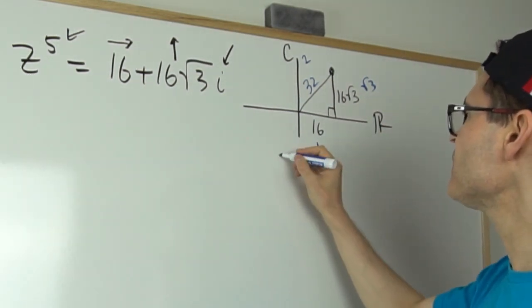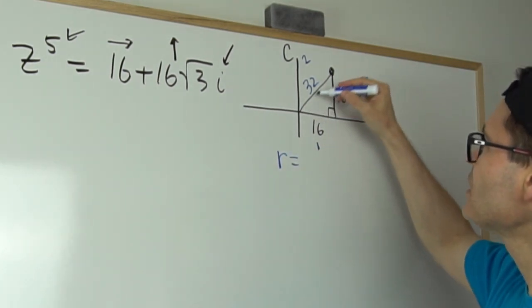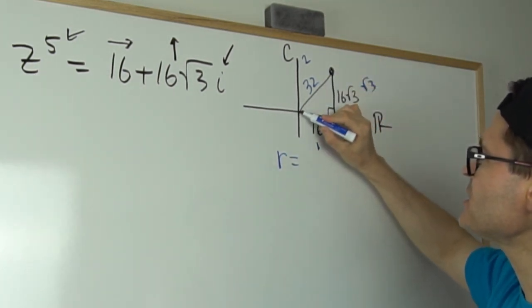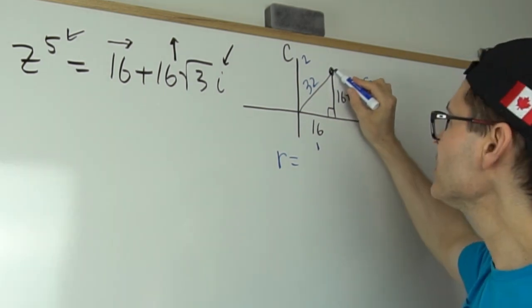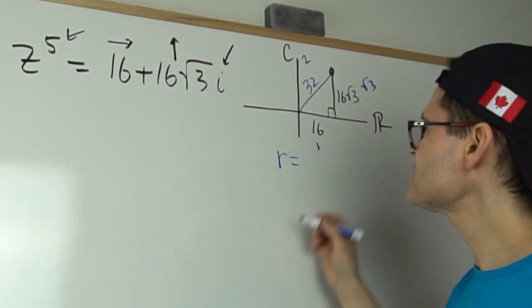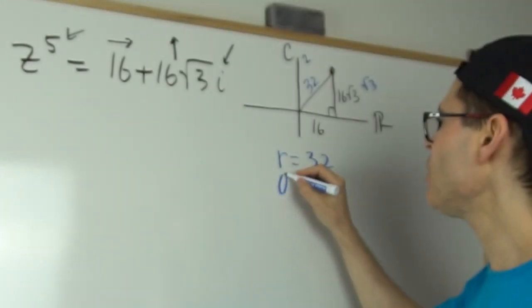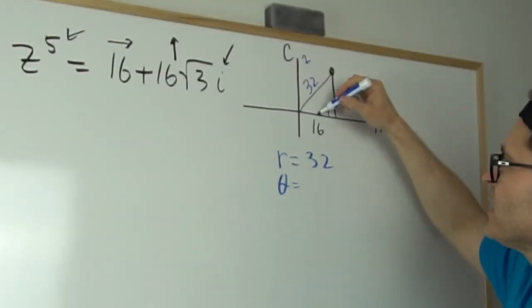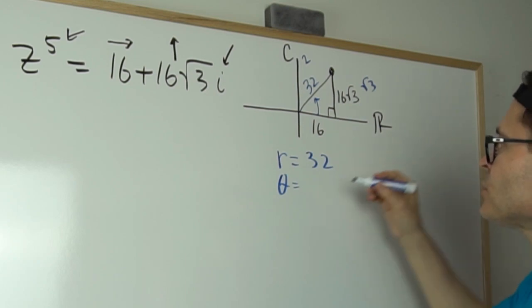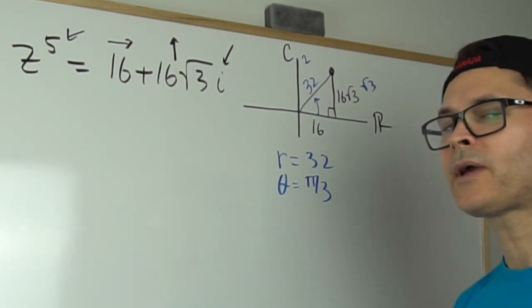Well, it tells me that the radius of this, which is the distance from the origin to the complex number, it's actually called the modulus, is 32. And also I need to know the angle of rotation right here. And because that's a special triangle, I know that's π over 3.